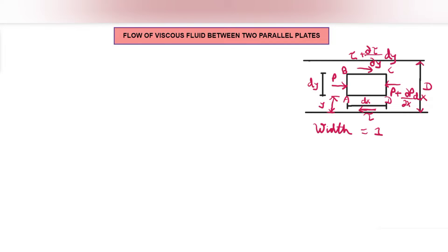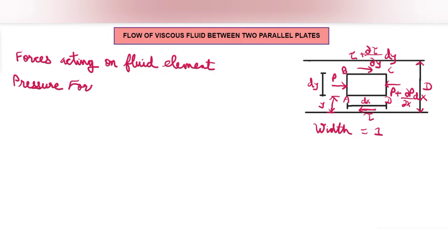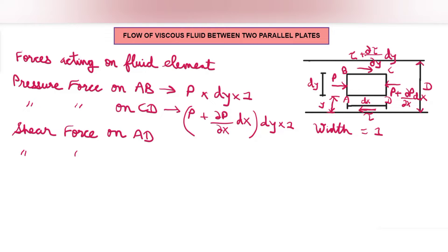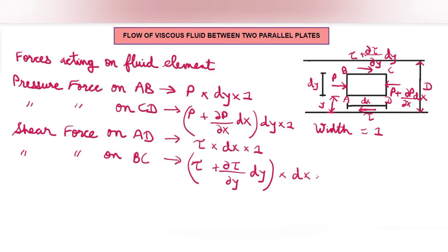Let me label this element as ABCD and write the forces acting on this fluid element. The pressure force on face AB is P·dy·1. The pressure force on face CD will be [P + (∂P/∂x)dx]·dy·1. The shear force on face AD will be τ·dx·1, and for face BC it will be [τ + (∂τ/∂y)dy]·dx·1.